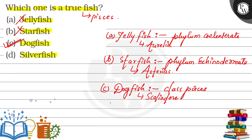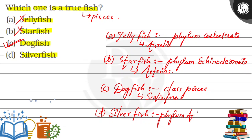What is the fourth one? Silverfish. This silverfish is actually an invertebrate. It belongs to phylum Arthropoda. What is the actual name? Lepisma. Right? Lepisma.